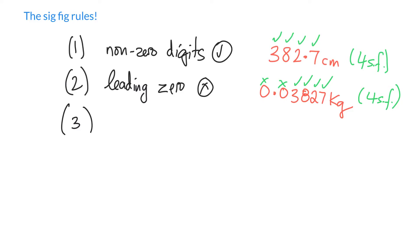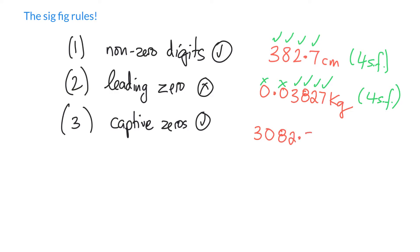The other place a zero can be is in between non-zero numbers — we call this a captive zero. Captive zeros are always significant. For example, 3,082.7 seconds has non-zero digits and one captive zero held between the 3 and the 8. Because of that, it is counted as significant. The five check marks tell us we have five significant figures here.